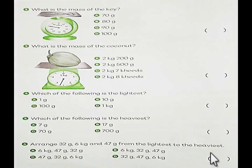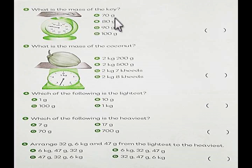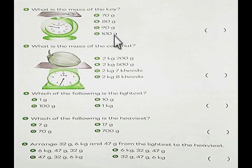Number 2. What is the mass of the key? Okay, these are the scale — look at the pointer. A: 70 grams. B: 80 grams. C: 90 grams. D: 100 grams. Choose A, B, C, or D.